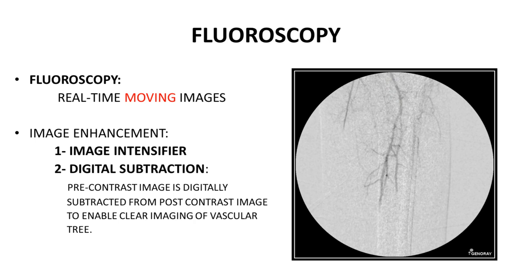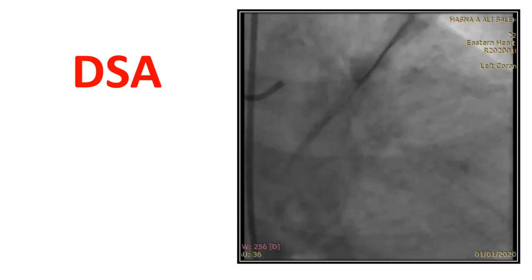A short video demonstrates the genicular vessels filling the popliteal artery from collateral circulation rather than from the superficial femoral above — this is called collateral circulation. Fluoroscopic arteriography also enables visualization of coronary vessels while the heart is beating after contrast injection.